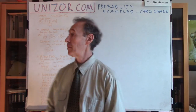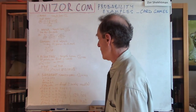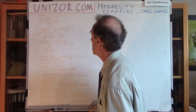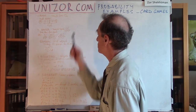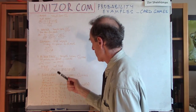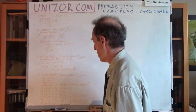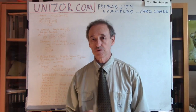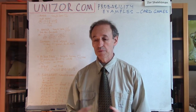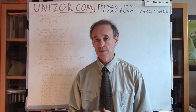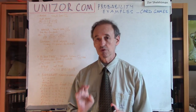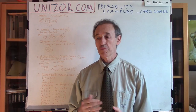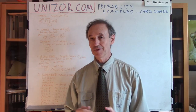So, four examples from four different card games: Poker, Bridge, Blackjack, and Baccarat. Again, I'm not going to examine all these games and all the details from each game. I just took a particular detail which might be probabilistically evaluated.